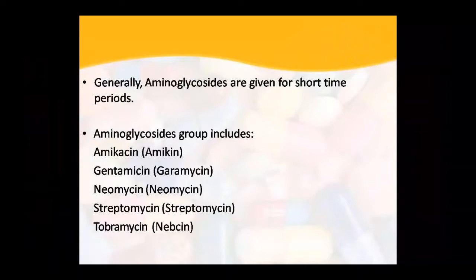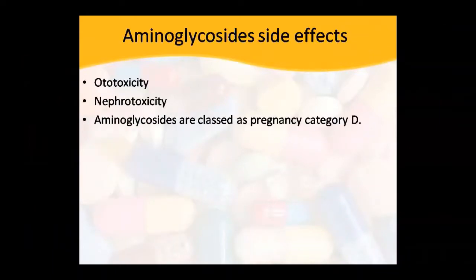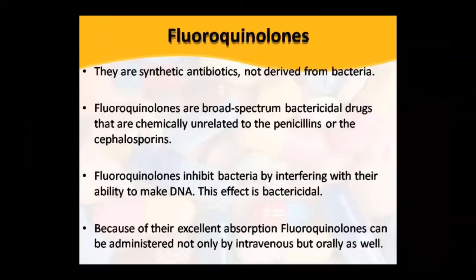Aminoglycoside drugs include amikacin, gentamicin, neomycin, streptomycin, and tobramycin. Side effects can include toxicity to the kidneys. In pregnancy they are category D.